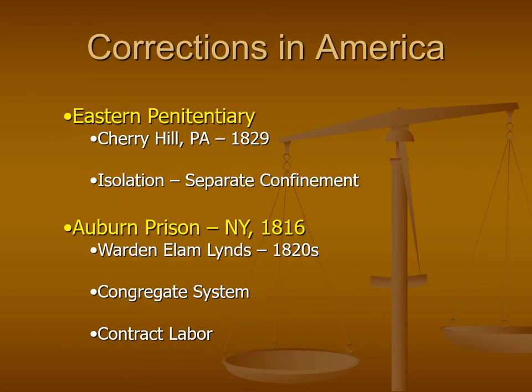As the penitentiary approach really started to take off in America, one thing that was quickly realized was that places like Walnut Street Jail just didn't have the capacity to house a large number of inmates, especially in their own cells or in isolation. Walnut Street Jail soon became overcrowded, which went completely against the idea of the penitentiary approach. So what we started to see in the early 1800s was America starting to build prisons — the beginning of the prison boom that continues to today.